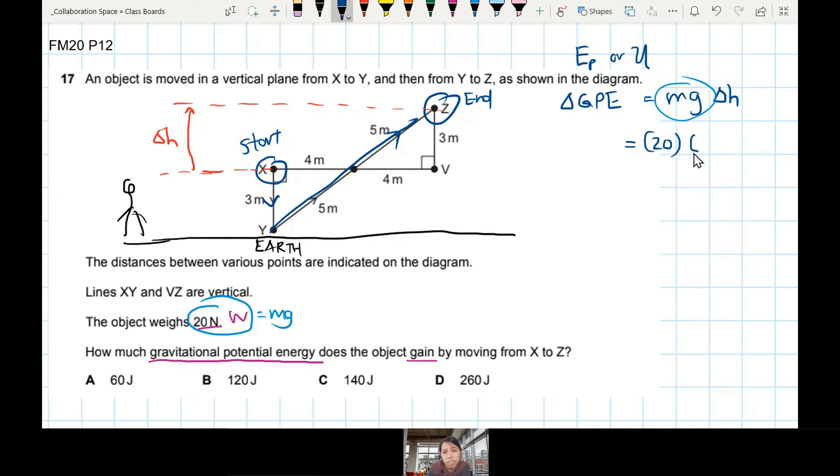Change in height? 3 meters from original to up there. This one is 3. 20 times 3, 60 joules. So 60 joules is the best answer. So if you thought of 60, nice.